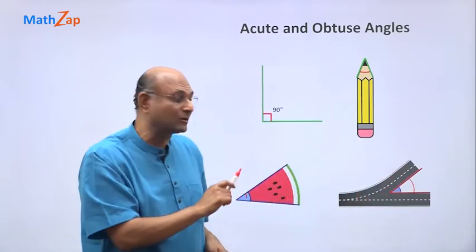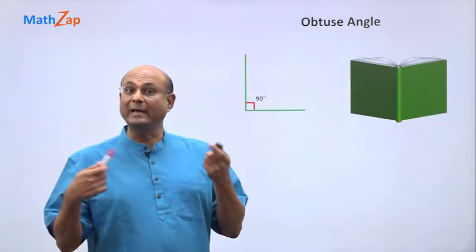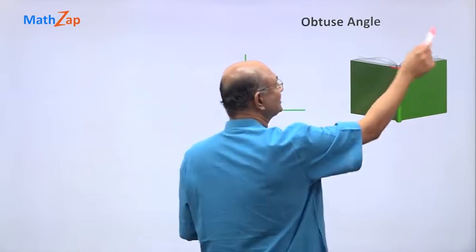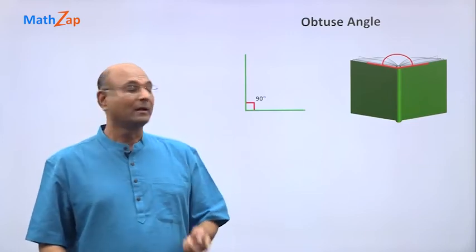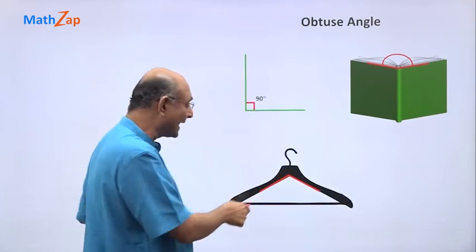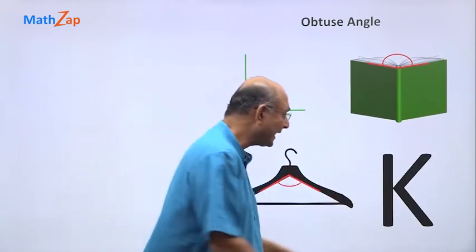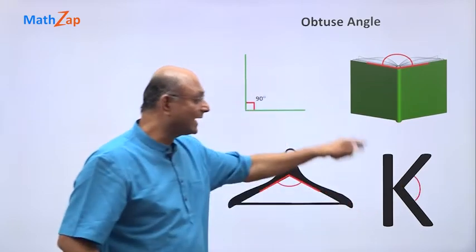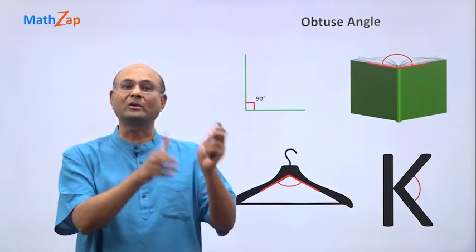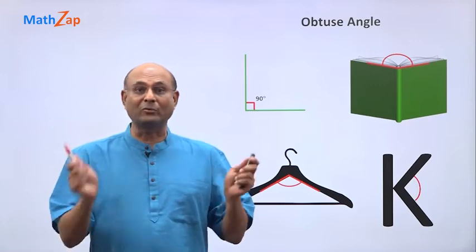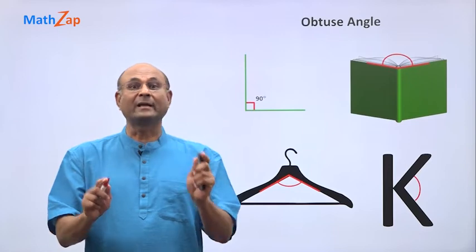And what about obtuse angles? Well, if you are reading a book, the edges of this book, the angle between them, that is an obtuse angle. This hanger, if you draw this angle, this angle is an obtuse angle. If you look at the letter K, the angle between these two lines, that is an obtuse angle. There are lots and lots of examples of acute, obtuse, and of course right angle angles all around us. Try and notice them.